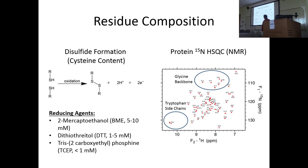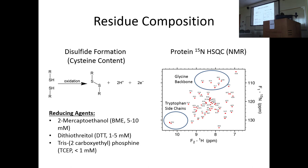Common reducing agents include BME, DTT, and TCEP. BME is the cheapest but also the smelliest — and when it reduces a disulfide, it actually leaves a chemical residual on the protein, which isn't desirable. DTT solves that problem and is a stronger reducing agent. TCEP doesn't smell at all and is a great reducing agent, but of the three it's the most expensive. There are some traditional concentrations typically used for each.